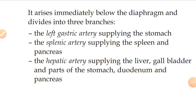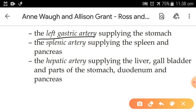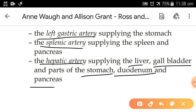There is a speciality in the celiac artery: it arises immediately below the diaphragm and divides into three branches. The first branch is the left gastric artery, which supplies the stomach. The second is the splenic artery, which supplies the pancreas. The third is the hepatic artery, which supplies the liver, gallbladder, and parts of the stomach, duodenum and pancreas.